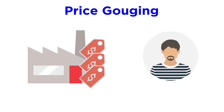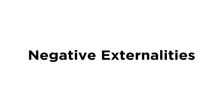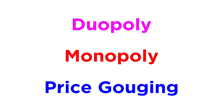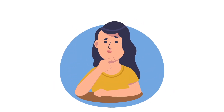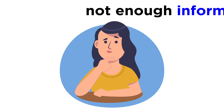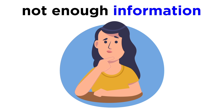A second potential problem with free markets involves negative externalities, which we will learn about in a later tutorial, but for now these are the unintended negative side effects of making and selling stuff. A third problem is the possibility of buyers and sellers not having enough information, leading them to make poor choices, which are not the most profitable choices possible.